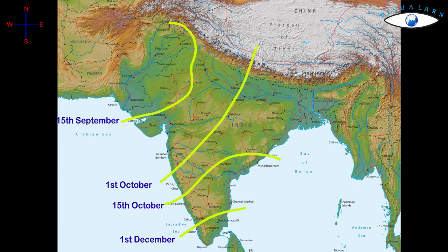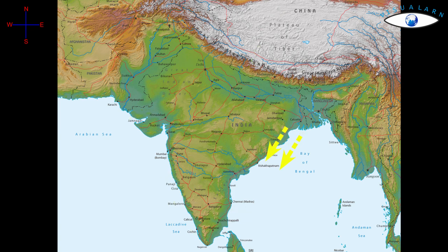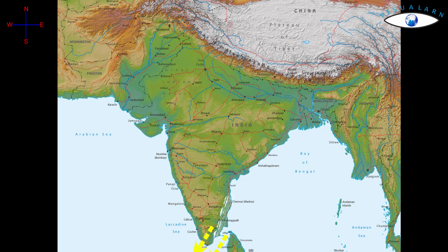During the return of the monsoon, it passes over the Bay of Bengal and picks up moisture. These rain-laden winds, called the Northeast Monsoon, are responsible for the winter rain in western Tamil Nadu.